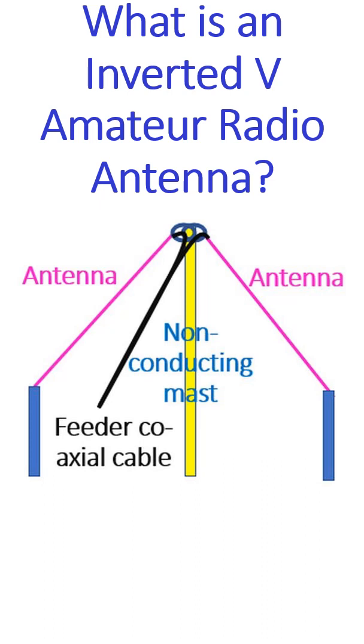As the name implies, it has an inverted V appearance with the two limbs of the antenna forming an inverted V, with the apex at the tip of the non-conducting mast.